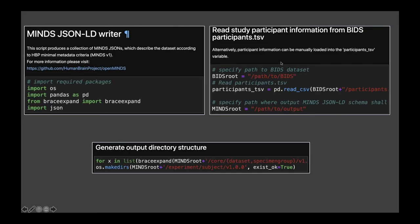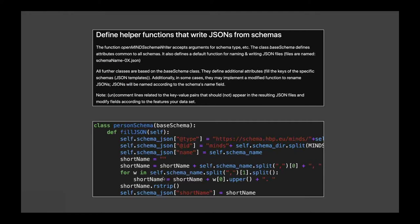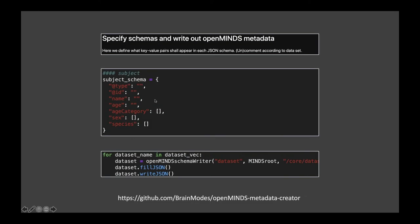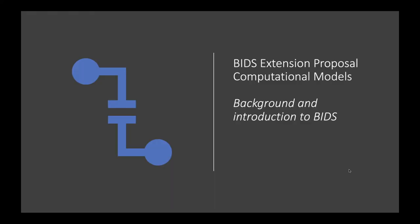We create schema blueprints, fill them with information, then convert to JSON and write them out. Meanwhile, OpenMinds has changed significantly and there is new software available, so this approach may already be outdated. This was the final word on TVB on eBrains workflows.